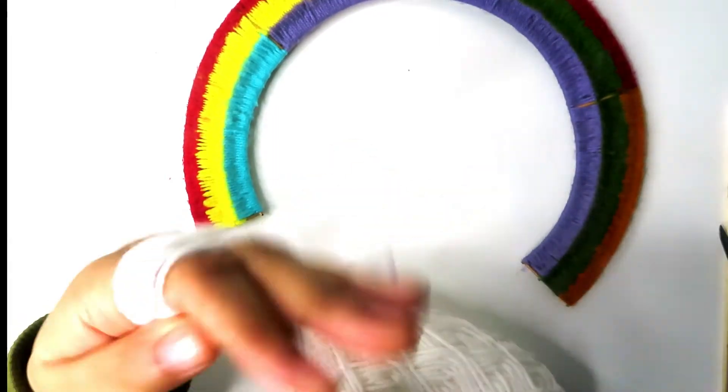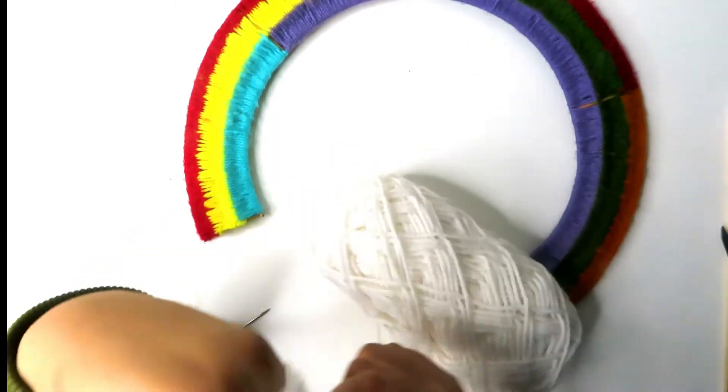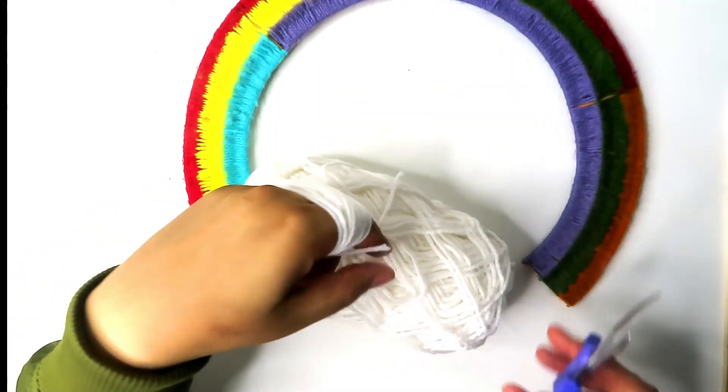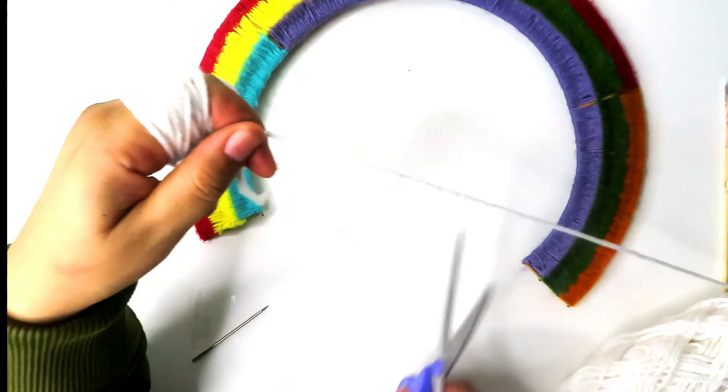To make the pom-poms, you're going to wrap the yarn around your hands 30 times. Cut that yarn and then cut another piece of yarn that is about 12 inches long.